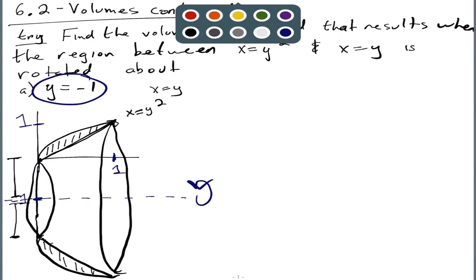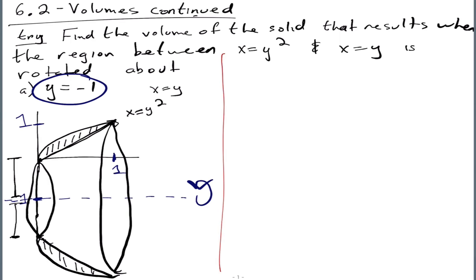Once we have the picture, we want to take a cross section. Is it going to be a vertical or horizontal cross section? There should be no ambiguity — it's the same as those circles I drew. So it's going to be vertical.